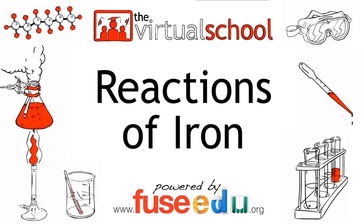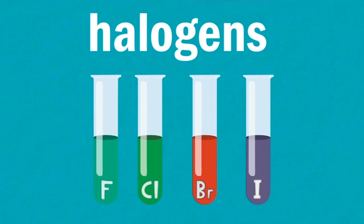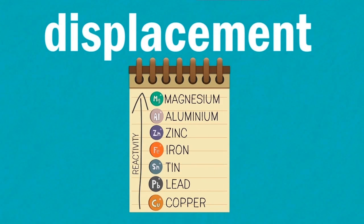In this video we're going to look at the reactions of iron. These will include reactions with air, water, the halogens, acid and displacement.